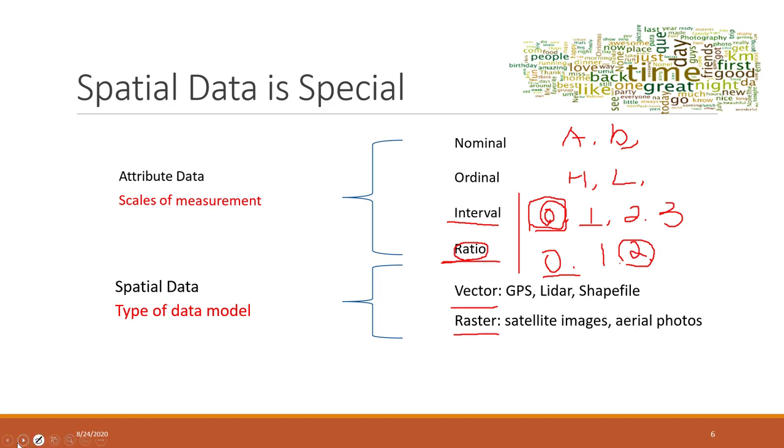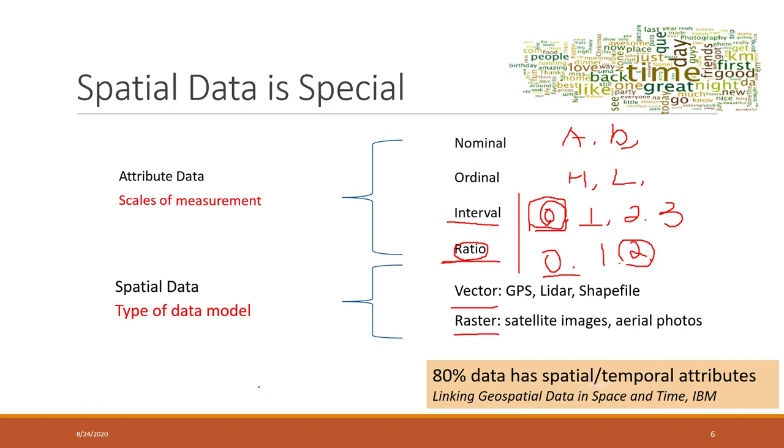As I mentioned, especially GPS is very popular. This statement is from five years ago - IBM said that 80% of the data has spatial and temporal attributes. The majority of data has spatial temporal attributes, and that's why GIS is now becoming more and more popular.